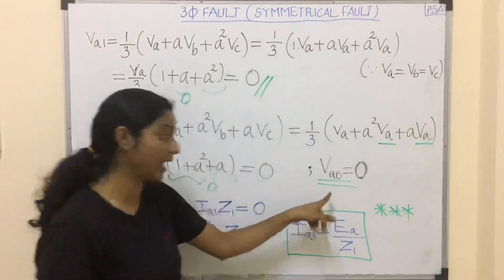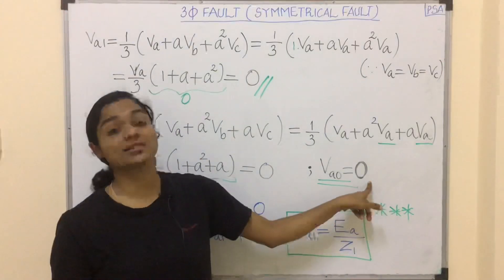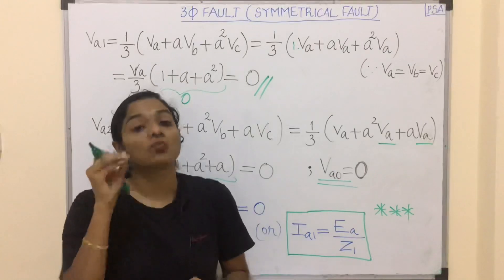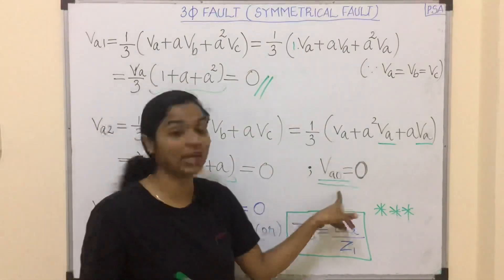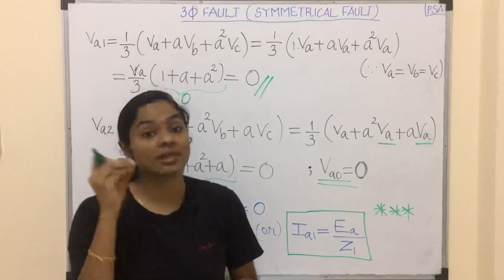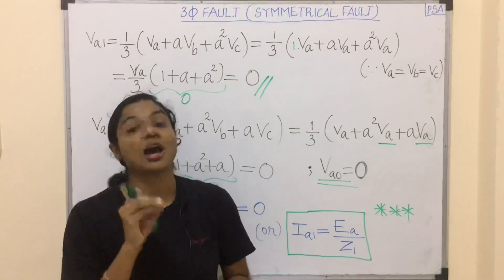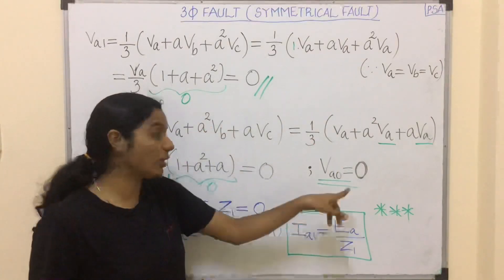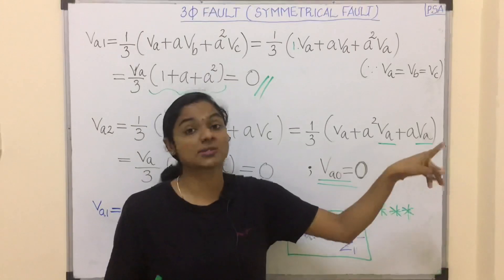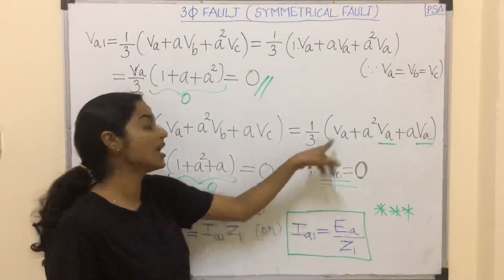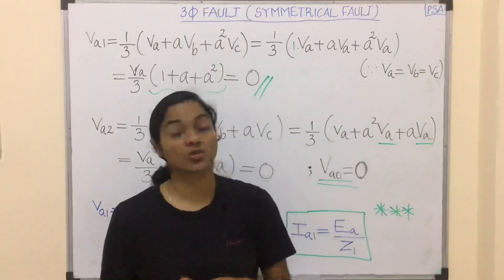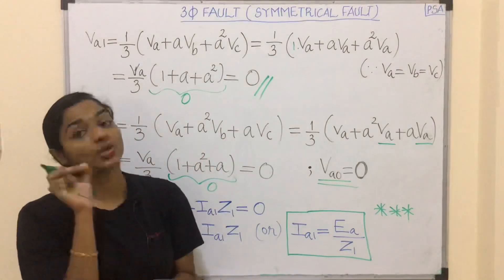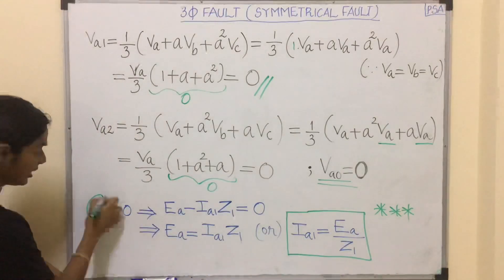The zero sequence voltage Va0 = (1/3)(Va + Vb + Vc). Since the current is balanced — Ia + Ib + Ic = 0 — the voltage is also balanced, meaning Va + Vb + Vc = 0. Therefore Va0 = 0 as well. So all three sequence components of voltage are zero: Va1 = 0, Va2 = 0, Va0 = 0.